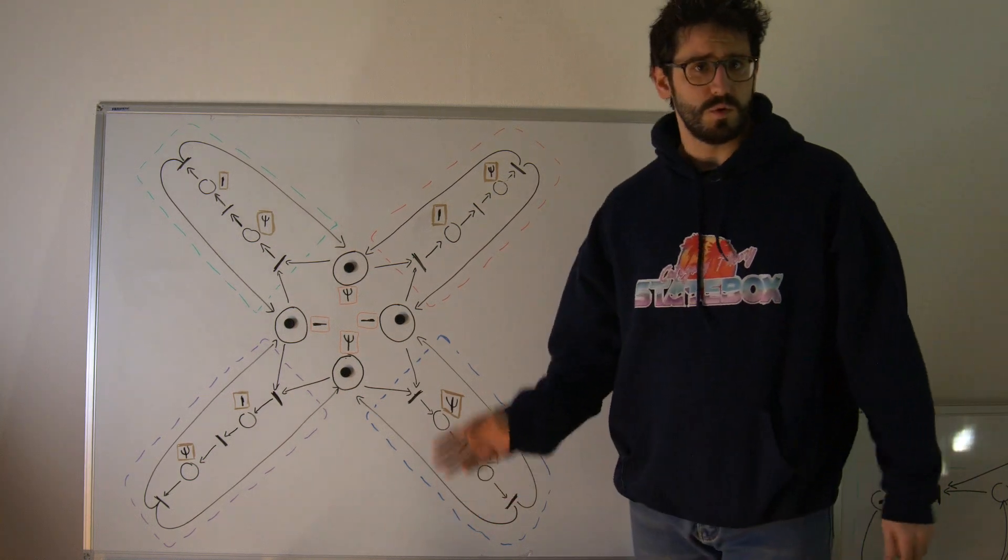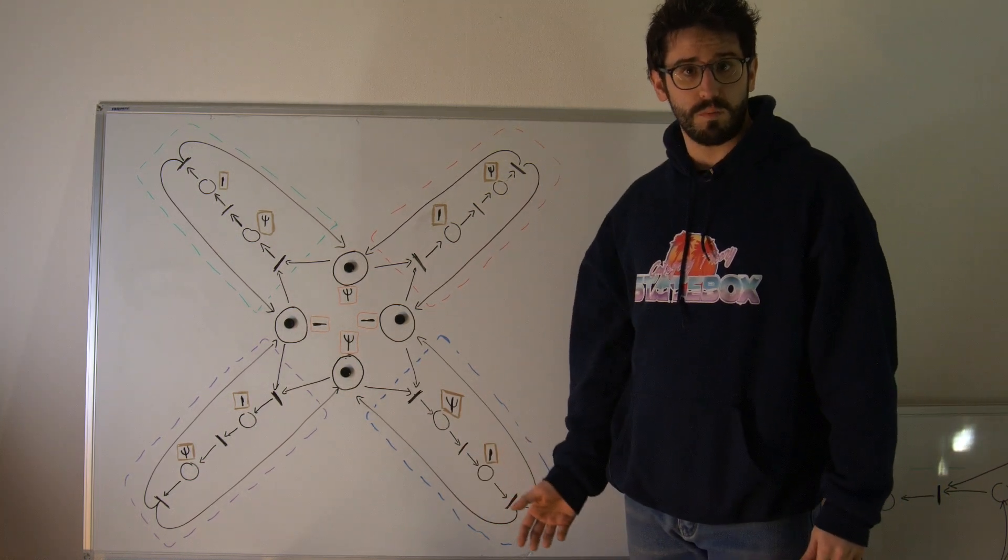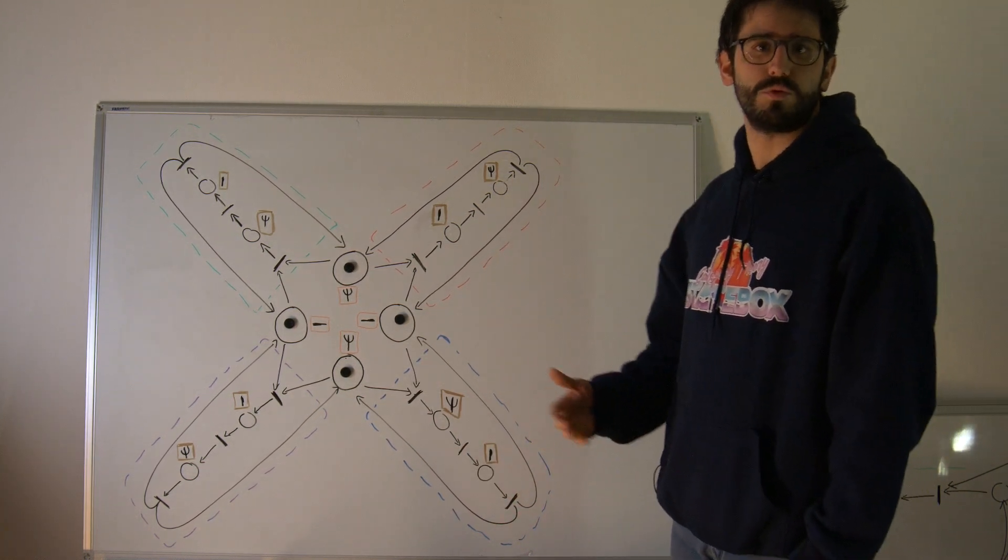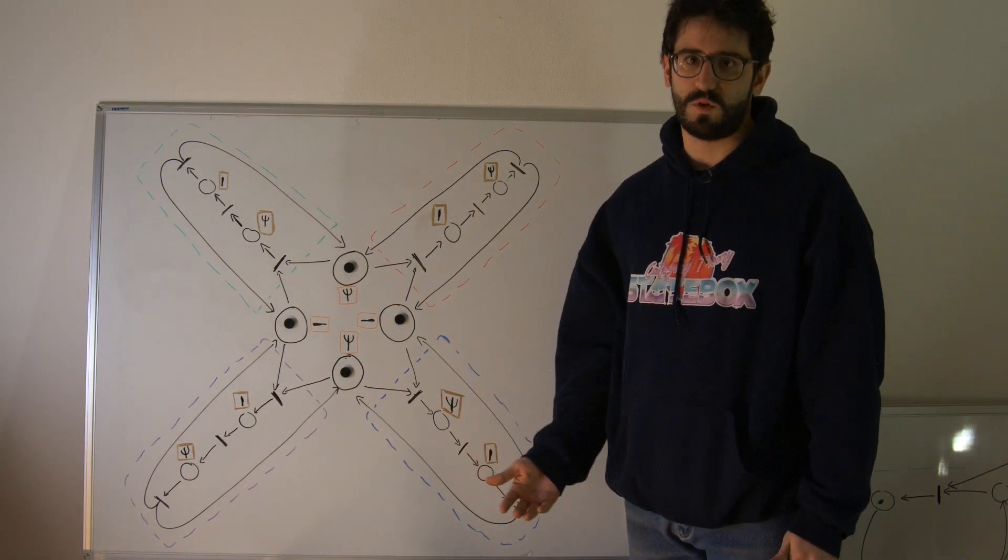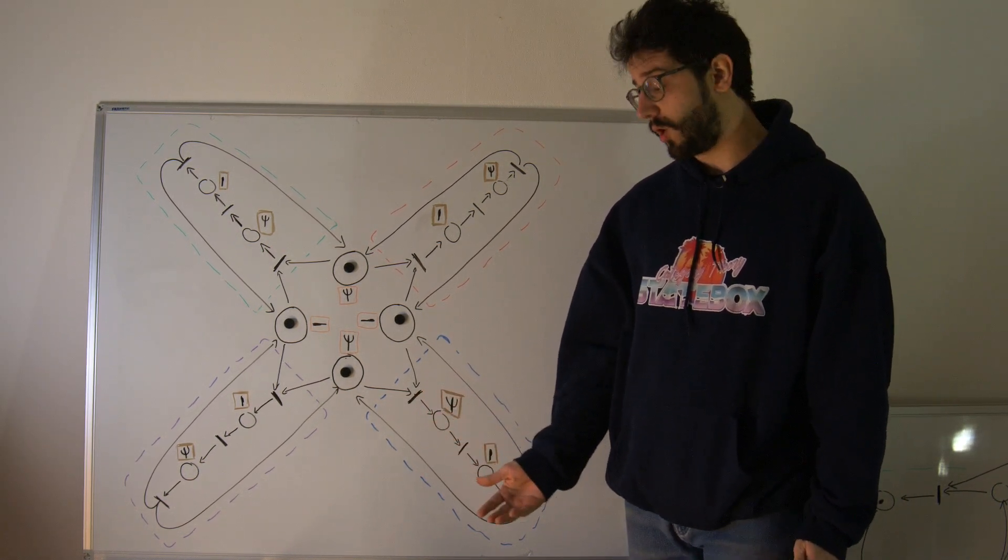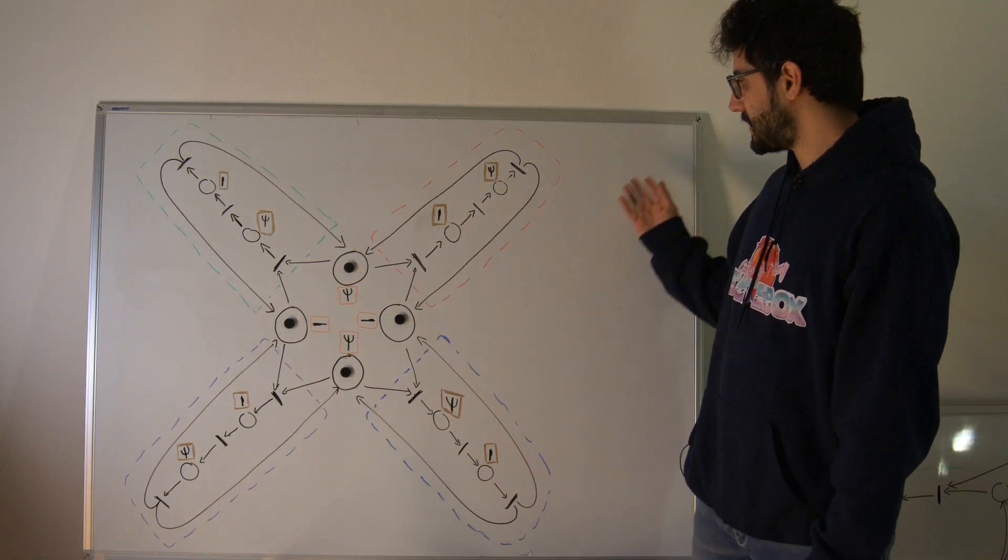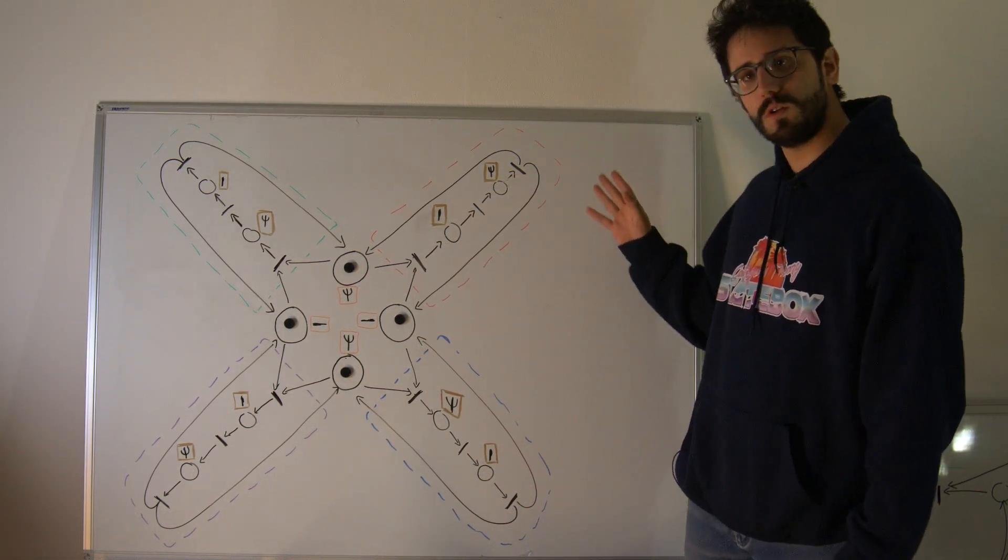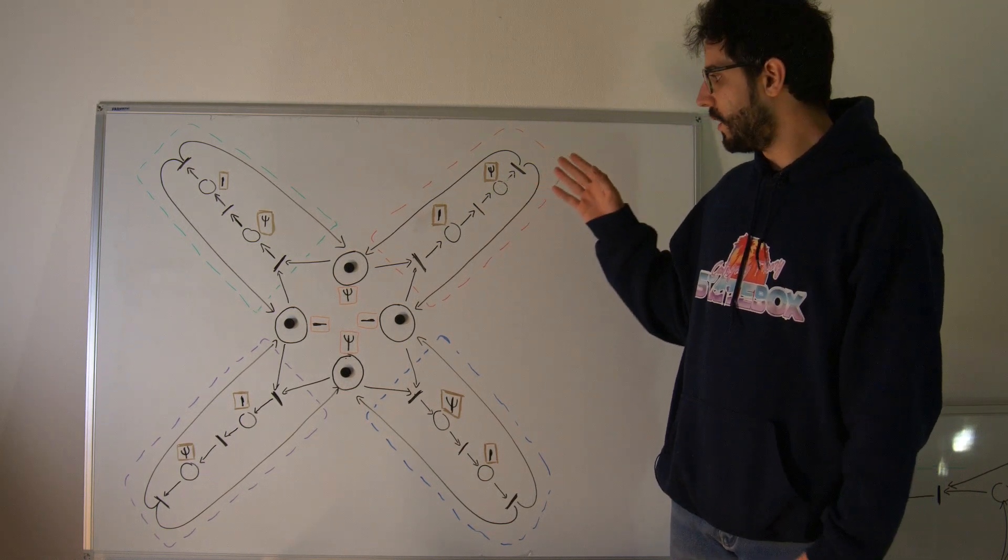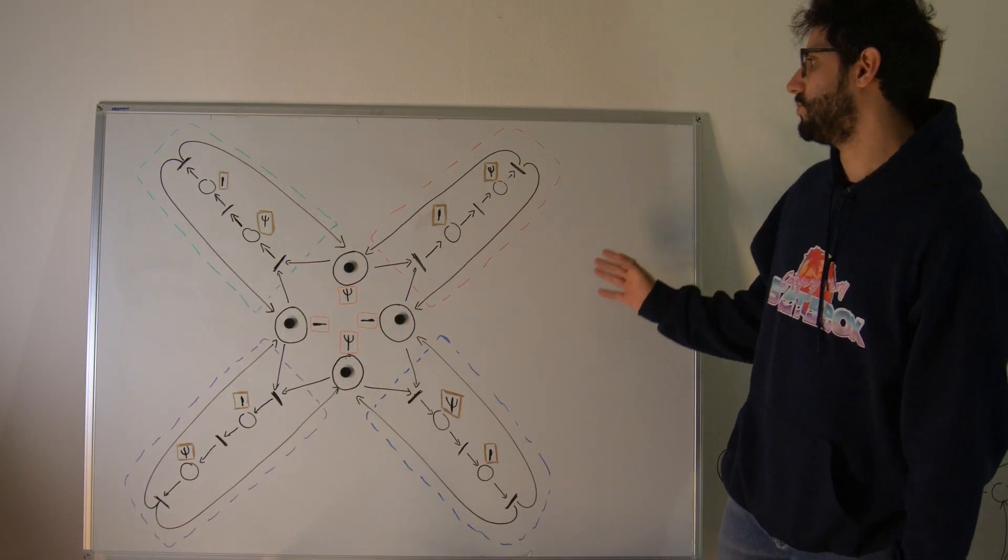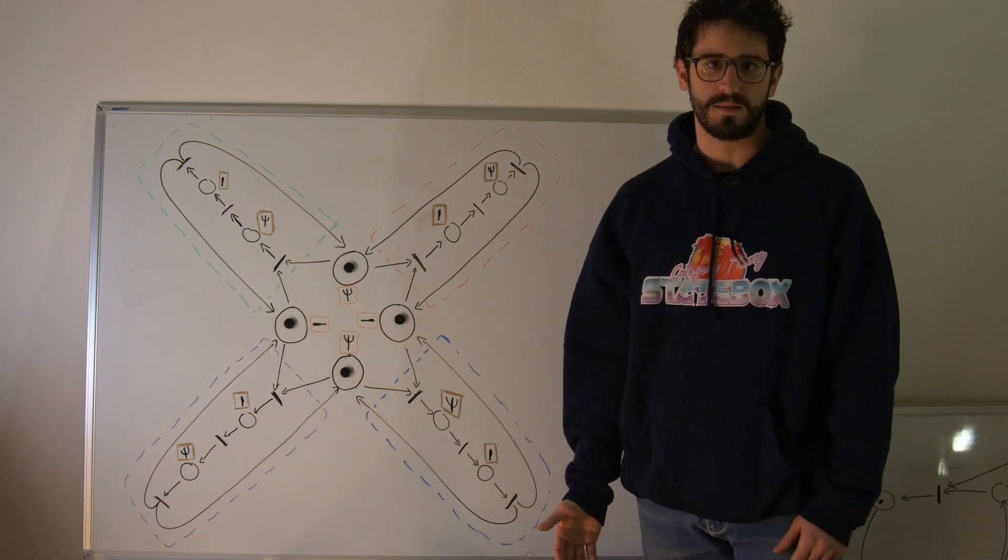This is not the only solution to the dining philosophers problem. There are many proposed ways to solve the deadlocking behavior, this is only one of them, but the gist of this is that I wanted to show you how these Petri nets can be used to model problems in full generality.